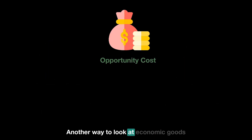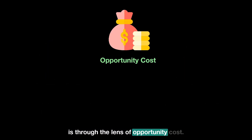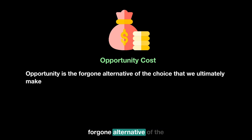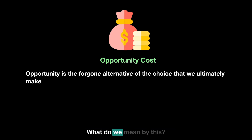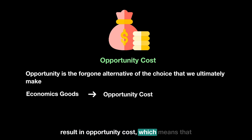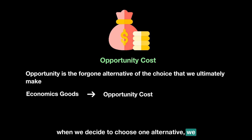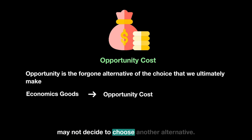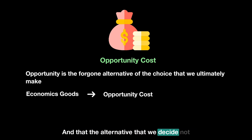Another way to look at economic goods is through the lens of opportunity cost. Opportunity cost is the forgone alternative of the choice that we ultimately make. Economic goods result in opportunity cost, which means that when we decide to choose one alternative, we decide not to choose another, and that unchosen alternative becomes our opportunity cost.